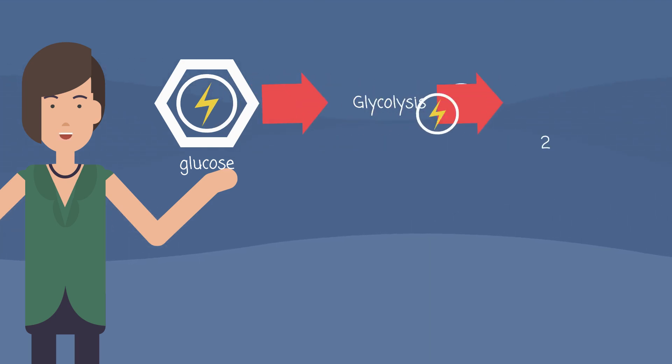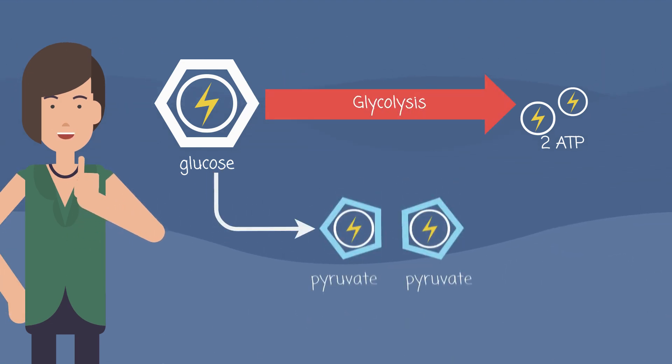In this process, we can produce two ATPs. Glucose breaks down into two pyruvate molecules and releases some electrons. Pyruvate and electrons are important to provide ATP in the next phases.